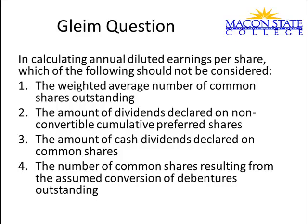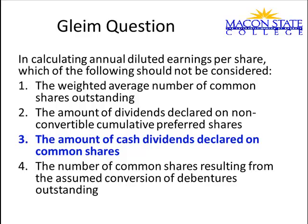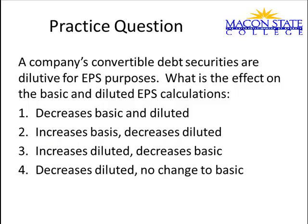Go ahead and freeze your frame, read the next question, make your selection, and then advance. Did you notice the word 'not'? We don't need cash dividends on common shares — it's not part of the calculation, basic or diluted earnings per share. Another question: convertible securities — it decreases the diluted, but there's no change to basic if you have convertible securities.